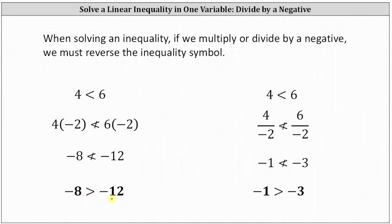Similarly, if we go back to four is less than six and divide both sides by negative two, we would have negative one less than negative three, which is false. To make the inequality true, we reverse the inequality and state it as negative one is greater than negative three.